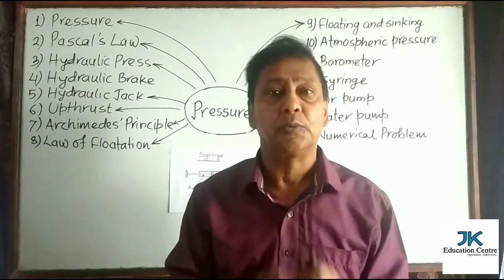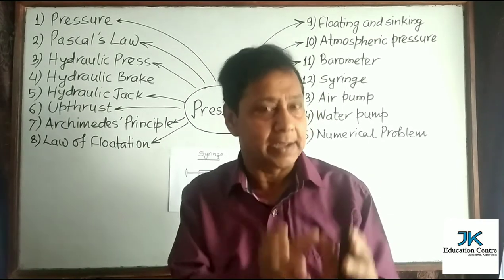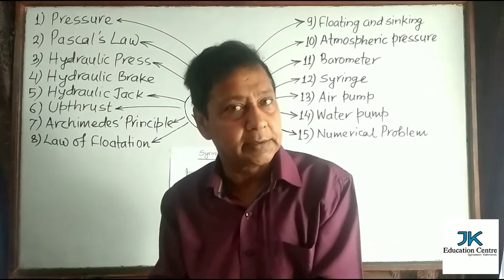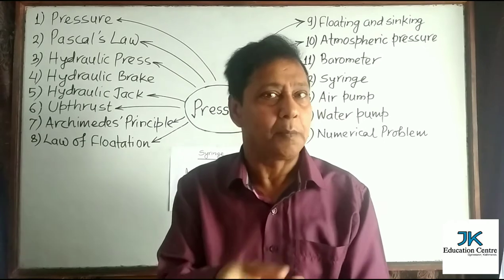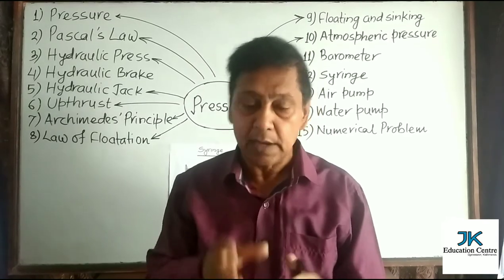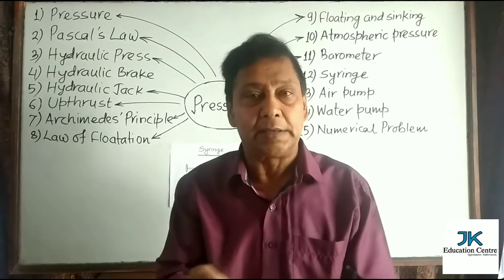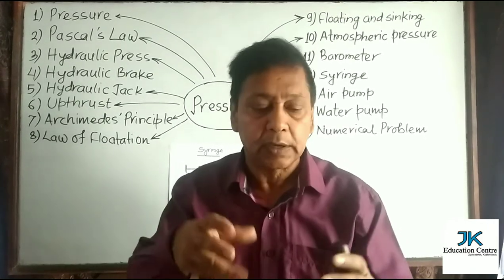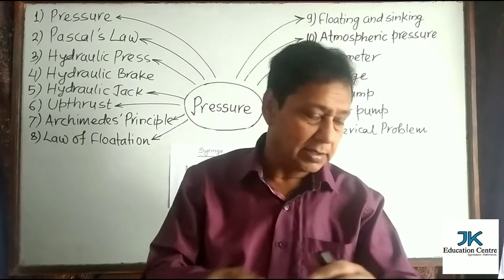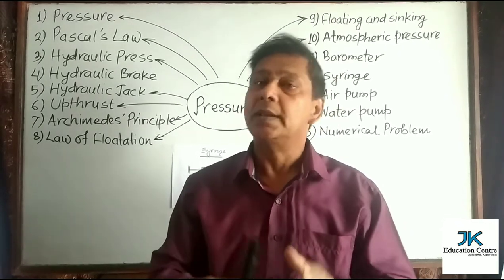What is the meaning of 'fluid flows from a region of high pressure to low pressure'? If pressure is high at a certain place and nearby the pressure is low at another place, then air blows from the high pressure region to the low pressure region. The same applies to water and other liquids. If there is a variation of pressure between two nearby places, then the fluid — liquid or gas — flows from the high pressure region to the low pressure region.